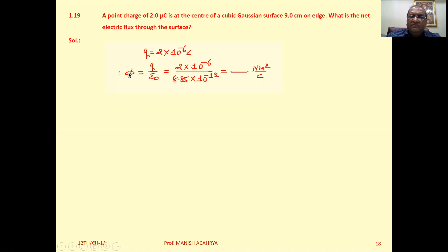Now, as per Gauss's theorem, flux phi, that is Q upon epsilon 0. Q, that is the charge enclosed by this cubic Gaussian surface, that is 2 into 10 to the minus 6, divided by epsilon 0, that is 8.85 into 10 to the minus 12.